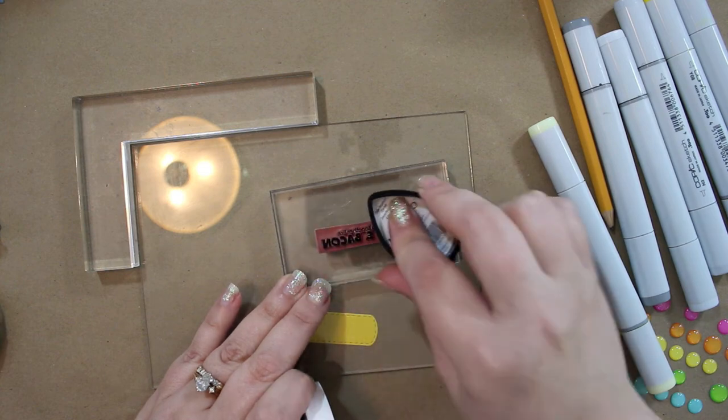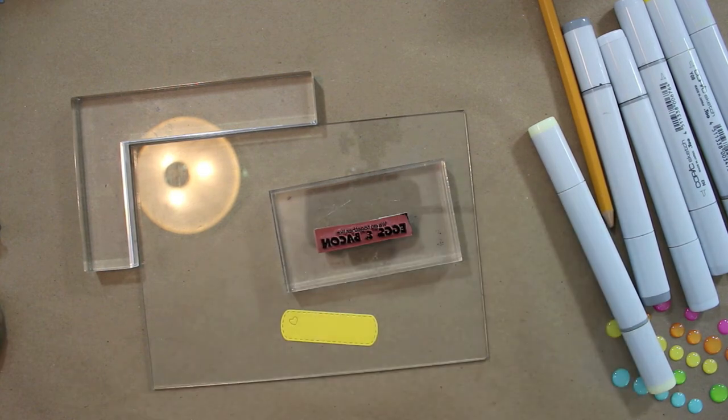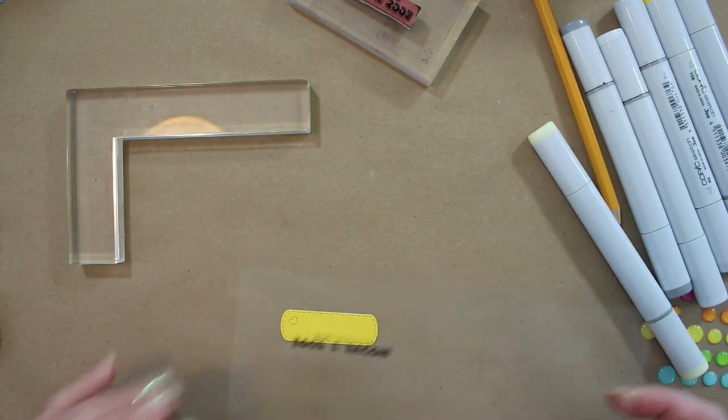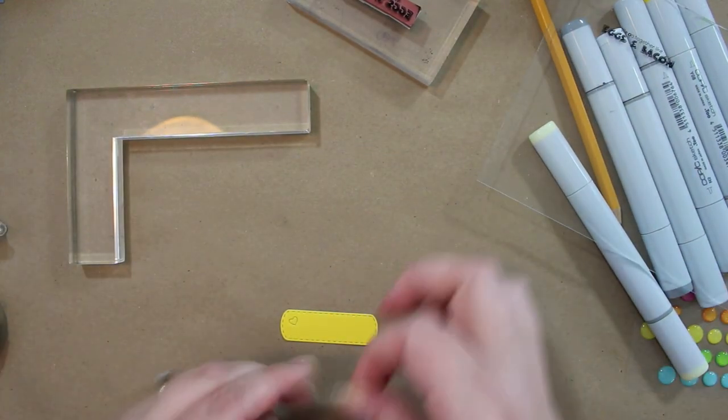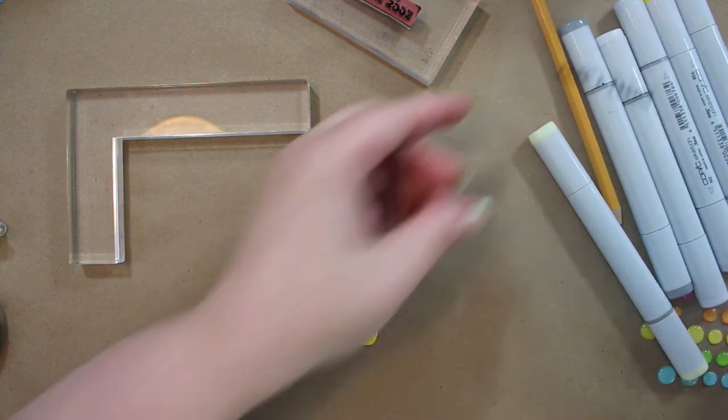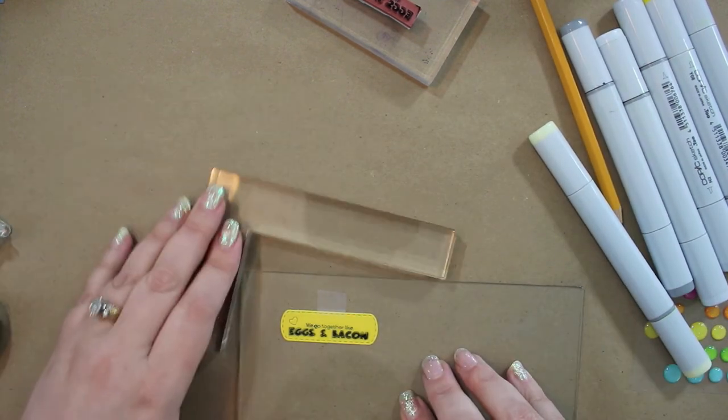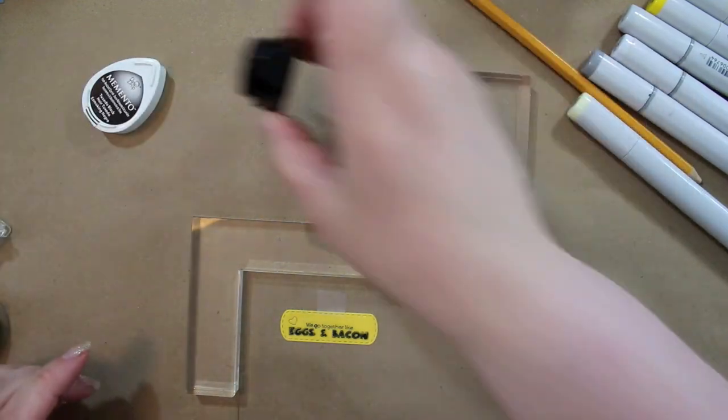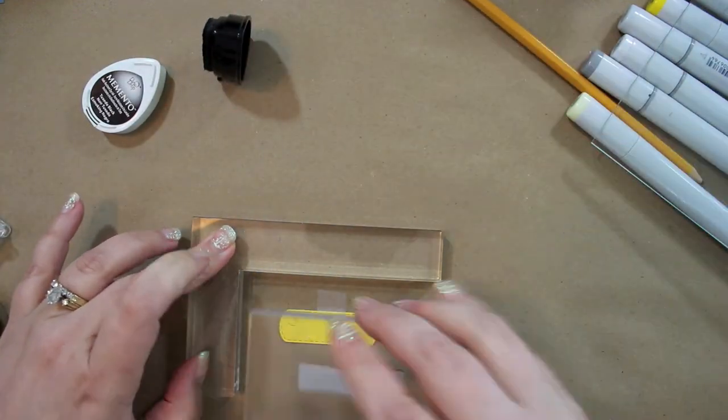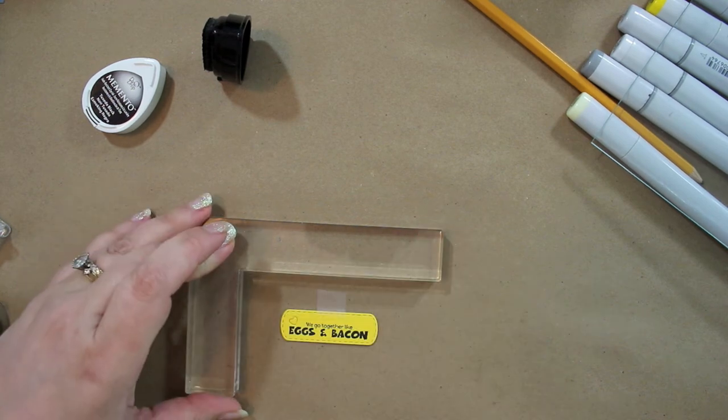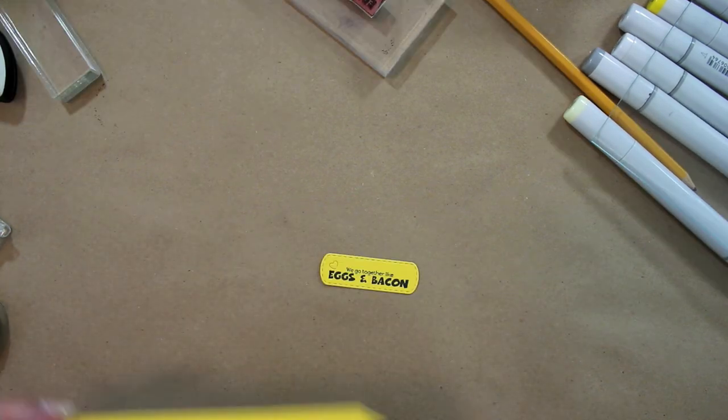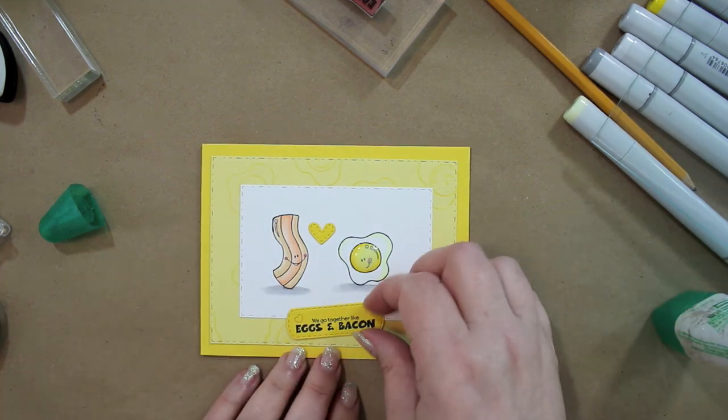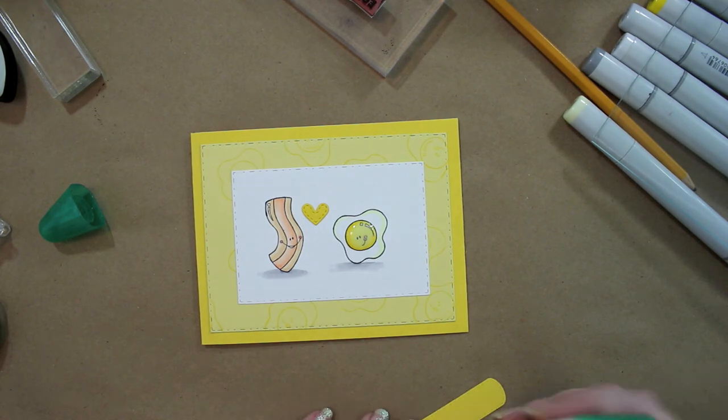I pulled out the acrylic stamp positioner again because I wanted to make sure I got my sentiment placed exactly on my little tag where I wanted it. If I didn't do this it probably would have been crooked, so I took my time and really got it spaced how I wanted it. I had to tape it down or I was afraid it was going to move on me. I was really happy where it ended up getting positioned on the tag.